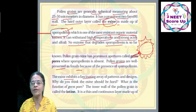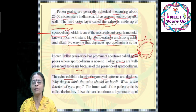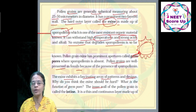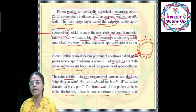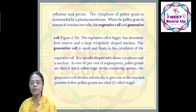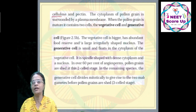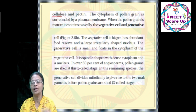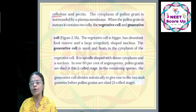The exine exhibits a fascinating array of patterns and designs. The inner wall, called the intine, is a thin, continuous layer made up of cellulose and pectin. The inner wall is always made up of cellulose and pectin, which is why it is flexible and capable of tube formation. The exine is tough, so it will not produce any germ tube — the germ tube emerges through the germ pore.